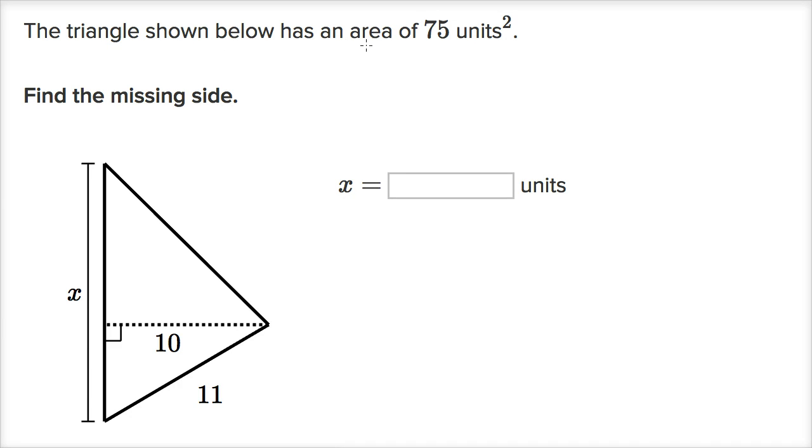The triangle shown below has an area of 75 square units. Find the missing side. So pause the video and see if you can find the length of this missing side.